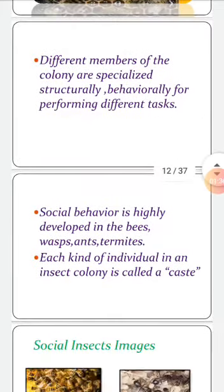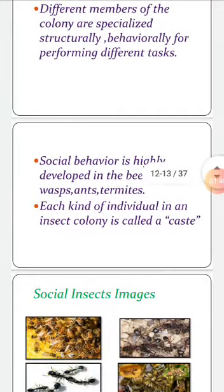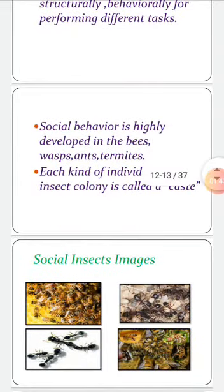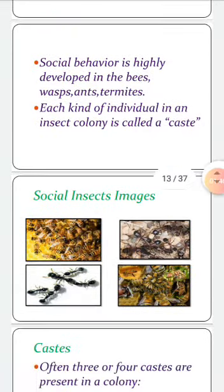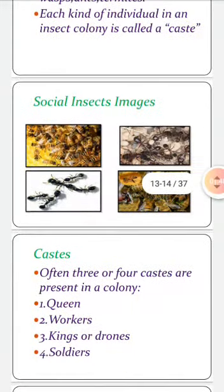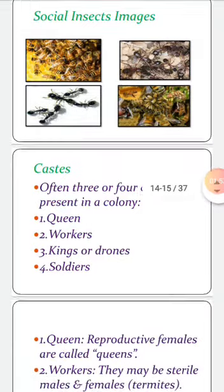Each kind of individual in an insect colony is called a caste. Often three or four castes are present in a colony: number one is queen, workers, kings or drones, and soldiers.